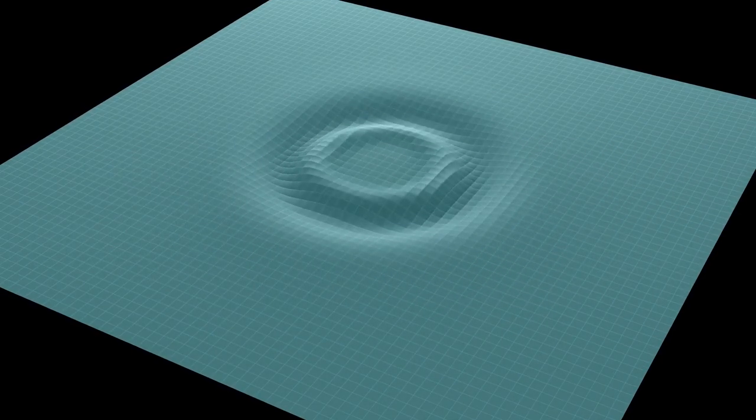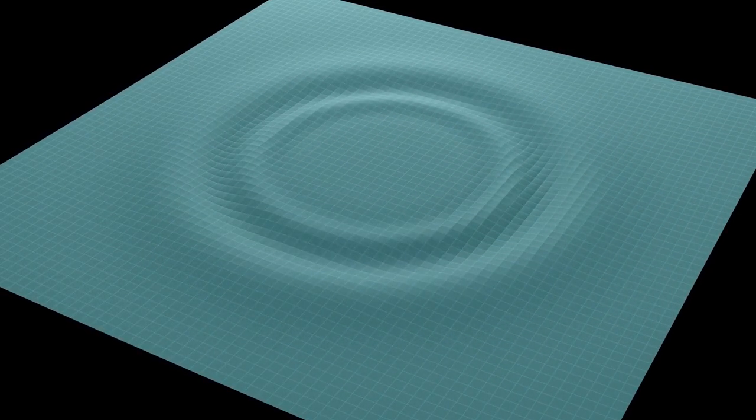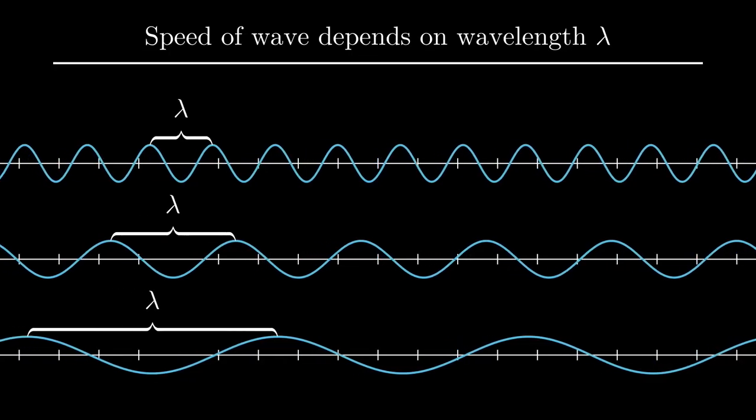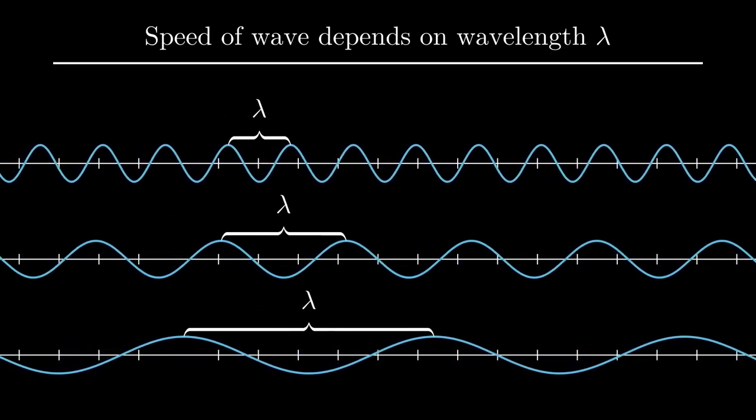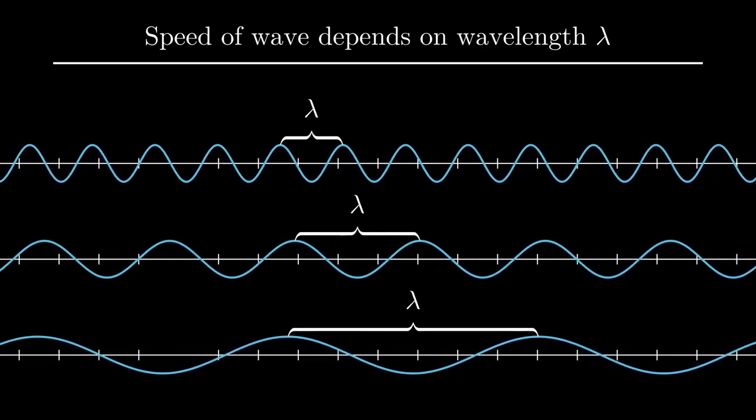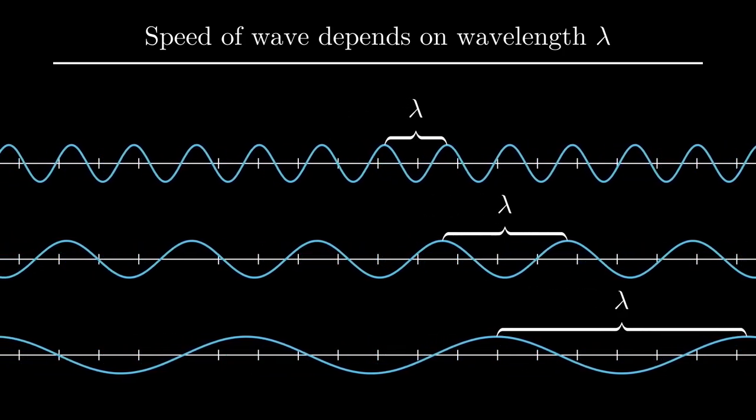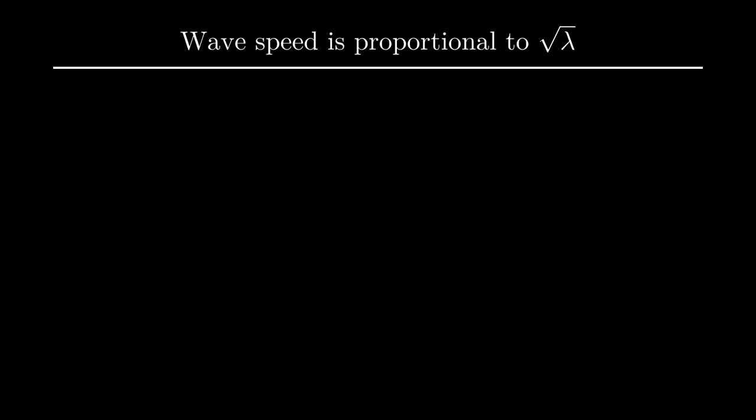In such an experiment, we always see a mixture of wavelengths. If we could separate them out into perfect waves of one particular wavelength each, the picture would look like this. The long waves move more quickly than the short ones. It turns out that, in deep water, the speed of a wave is proportional to the square root of its wavelength. We could take this dependence of wave speed on wavelength as an experimental fact, and move on.